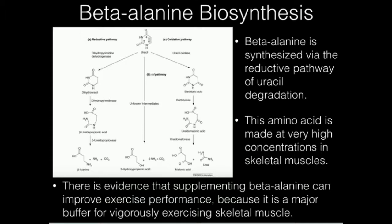All the amino acids that we have ever normally seen in proteins, they're all alpha-amino acids, meaning they have a carboxyl group and an amine attached to the same carbon, which is termed the alpha-carbon. Beta-amino acids do not have that property — their carboxyl group is not attached to the same carbon as their amine. If you look down here on the bottom left, this is the structure of beta-alanine where my mouse is, and you can hopefully see that the amine and the carboxyl group are not attached to the same carbon. It's a beta-amino acid.